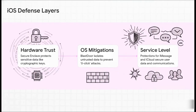We're going to examine this defense-in-depth model across three critical layers. First, we'll look at the hardware root of trust established by the Secure Enclave. Second, we'll dig into specific OS-level mitigations designed to counter modern exploits, like BlastDoor. And third, we'll cover the service-level protections they built for platforms like iMessage and iCloud.